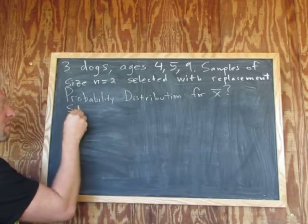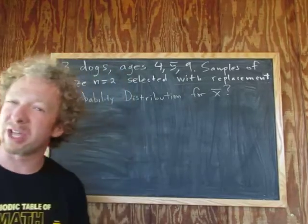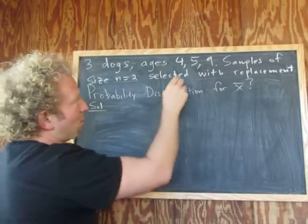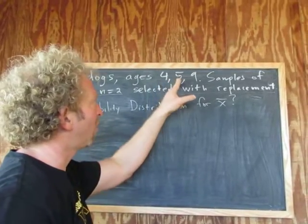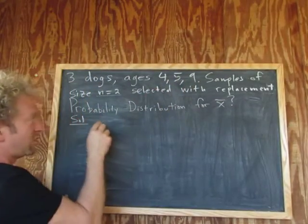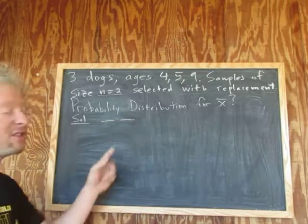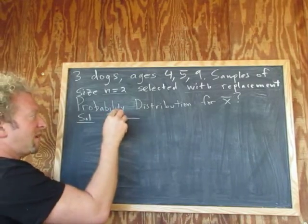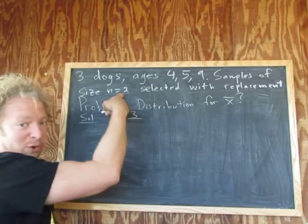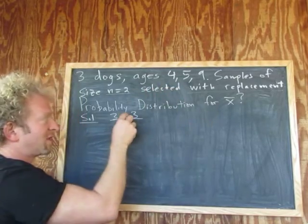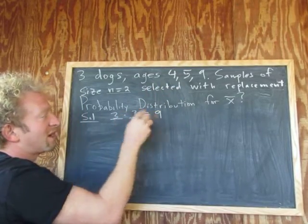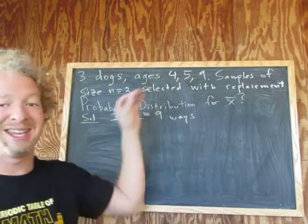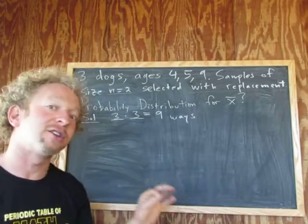So, solution. First, maybe an observation: how many possible samples do we have? Well, our samples are of size n equals 2, and we have a population of three dogs — ages 4, 5, and 9. We're selecting two of them: this is the first dog, this is the second dog. Since we have three dogs in our population, there are three ways to pick the first dog and three ways to pick the second dog. Why? Because it's with replacement — you take a dog, put it back, and take another. So it's three times three equals nine ways to pick two dogs. There are nine possible ways to take a sample of two dogs from this population.